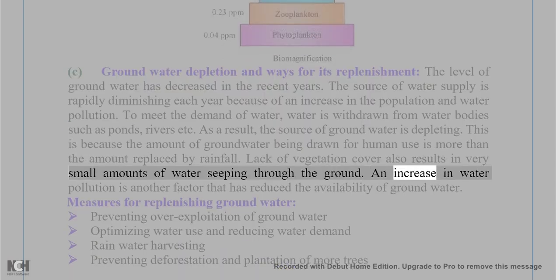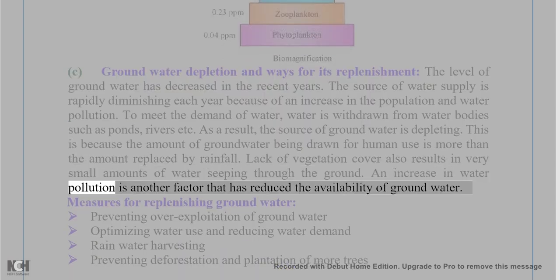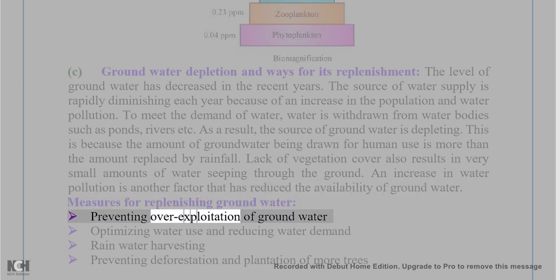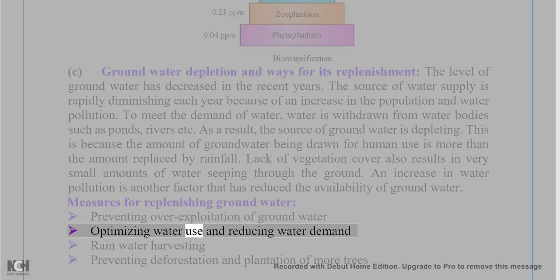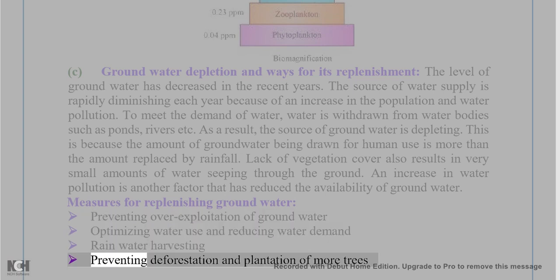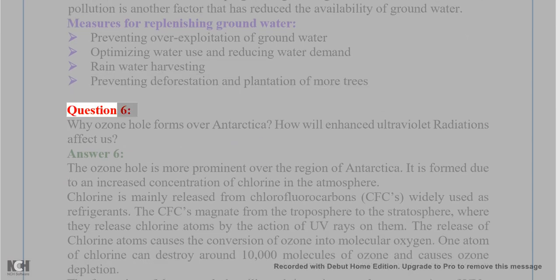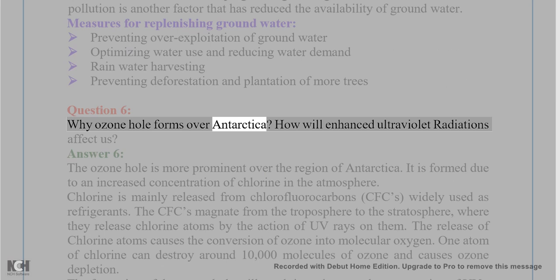Lack of vegetation cover also results in very small amounts of water seeping into the ground. An increase in water pollution is another factor reducing the availability of groundwater. Measures for replenishing groundwater include: preventing over-exploitation of groundwater, optimizing water use, reducing water demand, rainwater harvesting, preventing deforestation, and planting more trees.